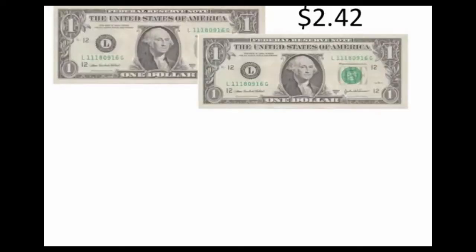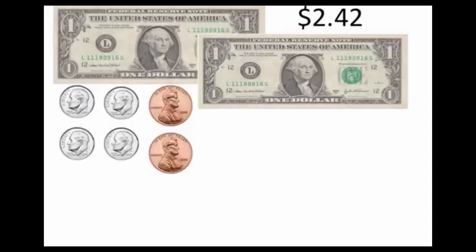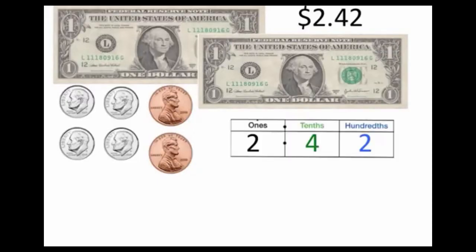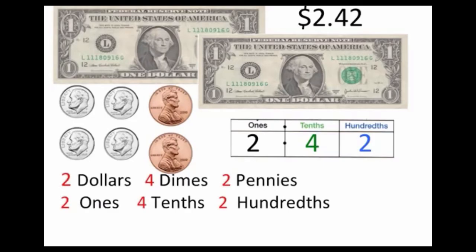Now let's take a look at this. We have two dollars and forty-two cents. Now, that can be made up with two dollars and here I have forty-two cents. I have two ones, two whole dollar bills, four-tenths, and two-hundredths. So if I look at it, it can be written like this. I have two dollars, four dimes, two pennies. Or two ones, four-tenths, two-hundredths.